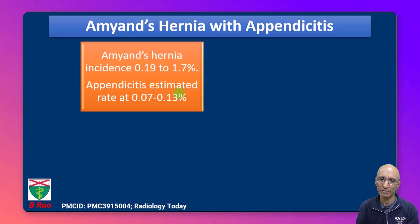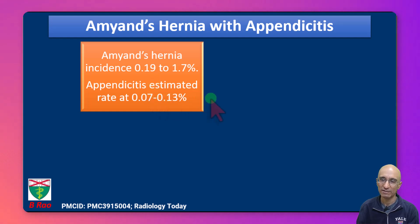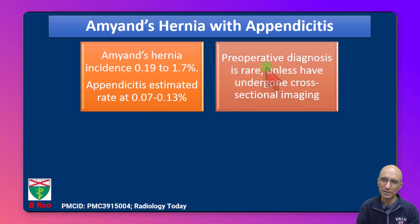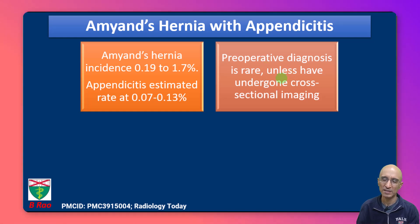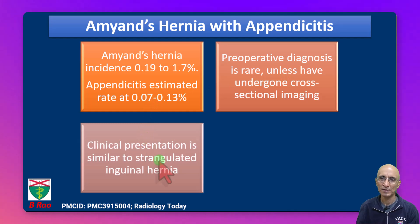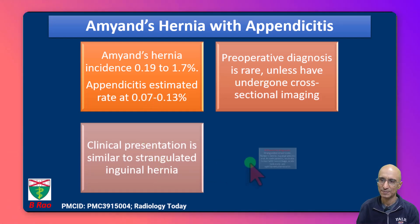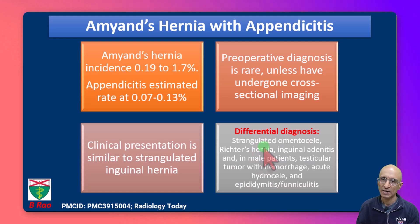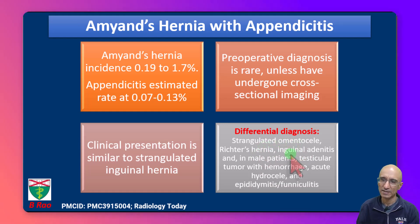This hernia is quite rare; the incidence is less than two percent, and appendicitis associated with Amyand's hernia is even rarer. The preoperative diagnosis is not possible unless the patient has undergone cross-sectional imaging. Clinical presentation is similar to strangulated inguinal hernia, as we saw in this case. The differential diagnosis includes strangulated omentum, which is more common in pediatric patients.